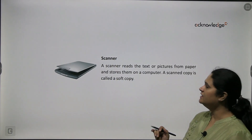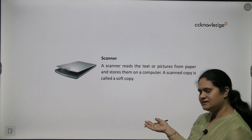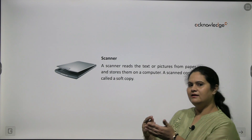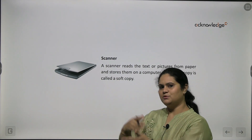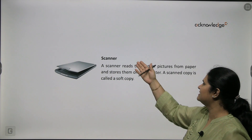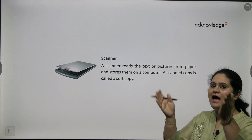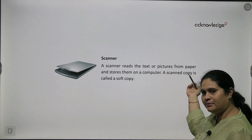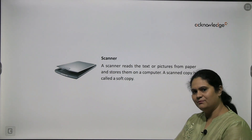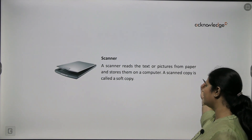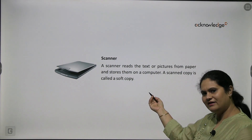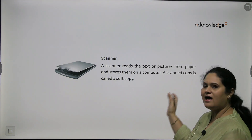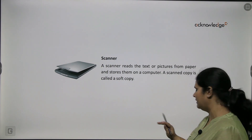Next is the scanner. It is just the opposite of a printer. A printer converts the soft copy into a hard copy, whereas a scanner reads the text or pictures from paper and stores them onto the computer. A scanned copy is called a soft copy, just like a printed copy is called a hard copy.